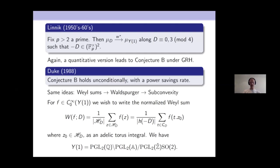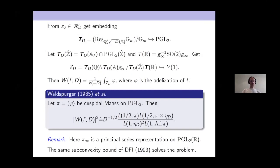Going more quickly since it is the same type of thing: the Heegner points are again a torsor under a class group, you can parameterize them by fixing a base point and adelizing. You realize the Heegner points as a torus orbit, and the Weyl sum modulus squared is the same type of L-function. Here pi above comes from a Maass form, so at infinity it is a principal series representation. The same subconvex bound of Duke-Friedlander-Iwaniec solves the problem. The original proof by Duke and Iwanić did not use Waldspurger; it used an embedding method directly estimating Fourier coefficients of half-integral weight without using L-functions. The L-function proof I present is a second proof which generalizes better.